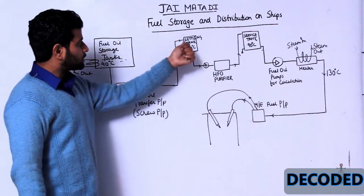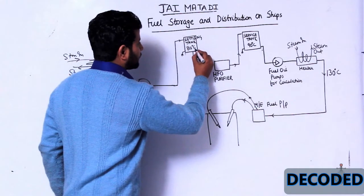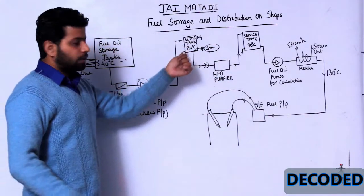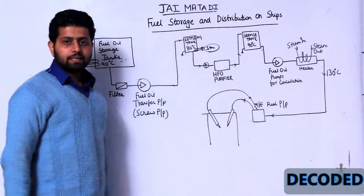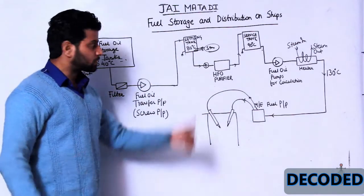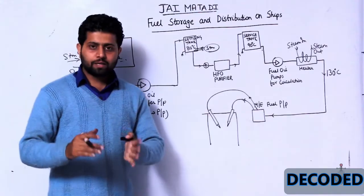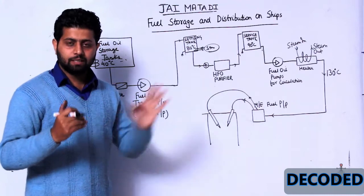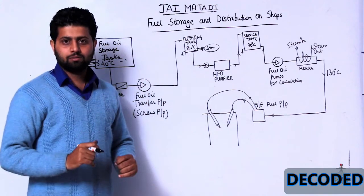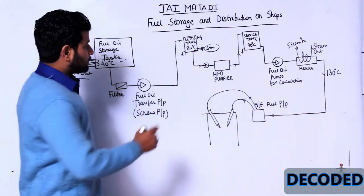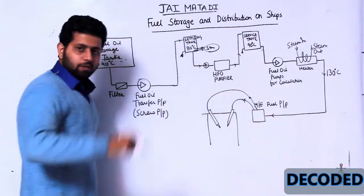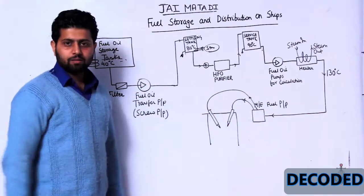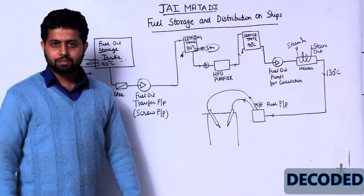From the storage tank, a fuel oil transfer pump — which is a screw pump — takes suction and pushes oil through the filter into the settling tank. In the settling tank, steam in and steam out heats the fuel oil up to 80 degrees centigrade. It is called a settling tank because all the dirt particles, dirty things, and even water — which is heavier than oil — settle down. We open a drain to remove the water and sediments, so a kind of separation is taking place.